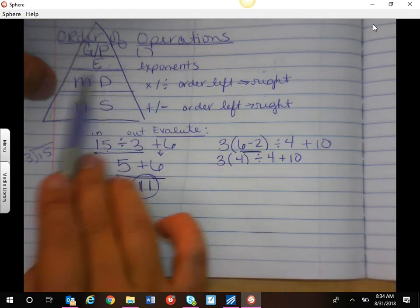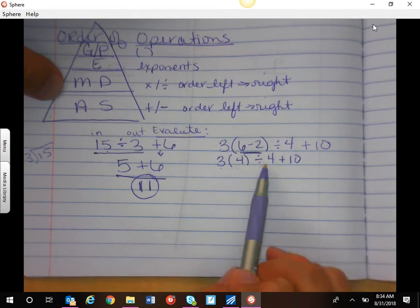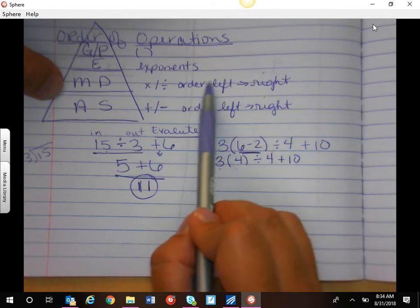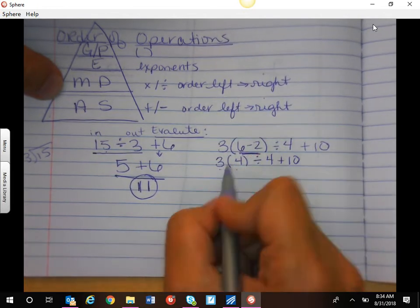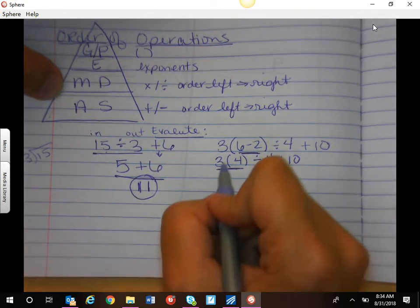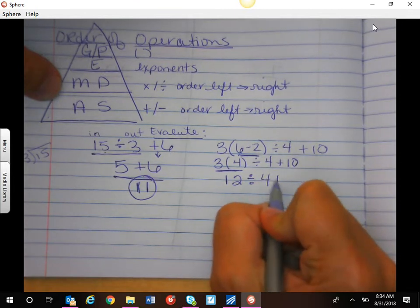So I've done my parentheses here. I don't have any exponents, so I'm going to multiply divide. Now remember, parentheses means multiply, and then I also have a division symbol. So the key for multiply divide is in order from left to right. It happens to be that multiply is first, so I need to do that first. 3 times 4 is 12, and I'm again writing everything out.